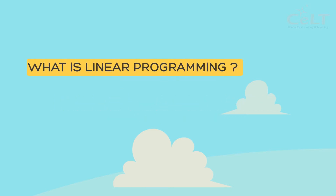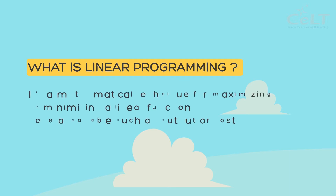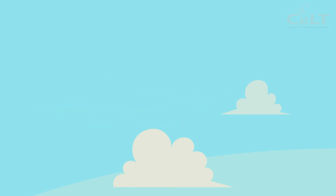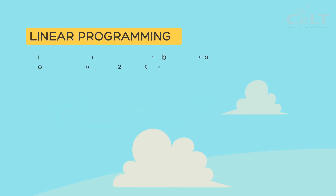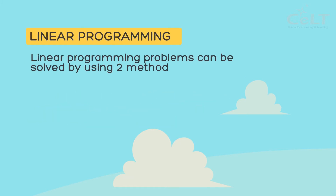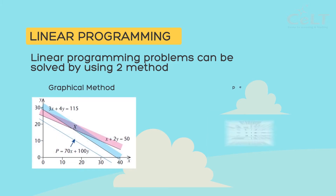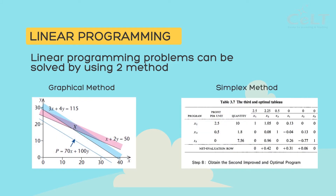What is Linear Programming? It is a mathematical technique for maximizing or minimizing a linear function of several variables, such as output or cost. Linear Programming problems can be solved by using two methods: the graphical method or the simplex method.